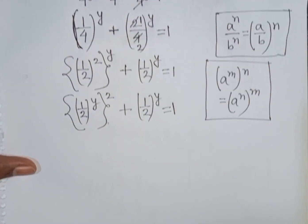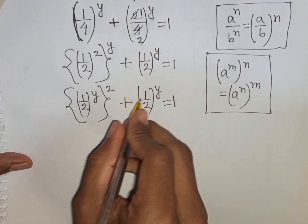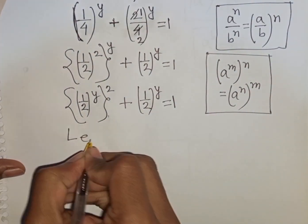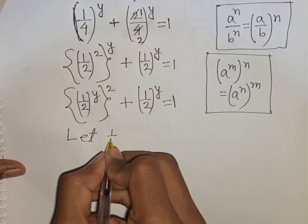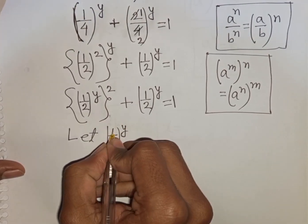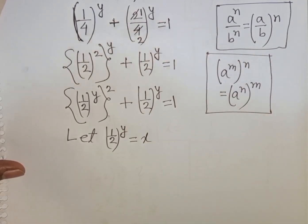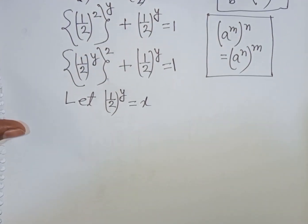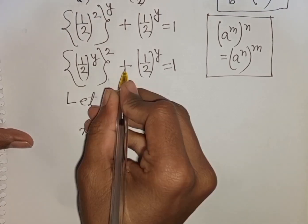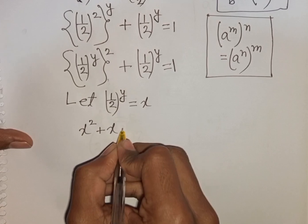Now we see (1 over 2) power y appears in both terms. So let (1 over 2) power y be substituted by x. Our equation will then be x squared plus x is equal to 1.